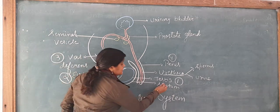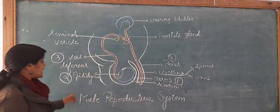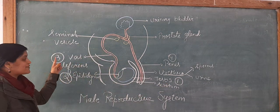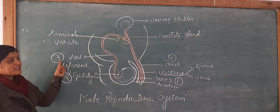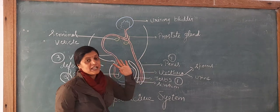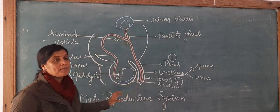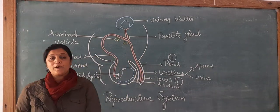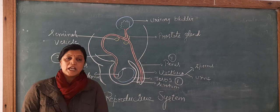So there are four main parts of the male reproductive system: first is the testis, second is the epididymis, third is the vas deferens, and fourth is the penis.